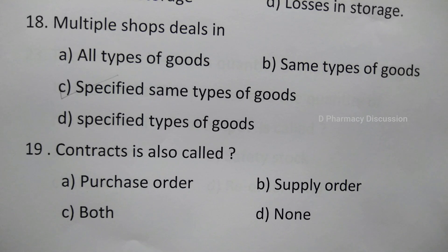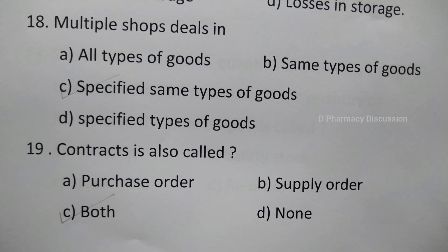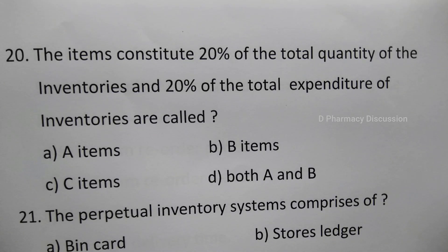Question 19: Contracts are also called — option A: purchase order, B: supply order, C: both, D: none. The correct answer is option C, both — that is purchase order and supply order. After the selection of a supplier, a mutual agreement is done between the supplier and the buyer, and that agreement is called a contract.